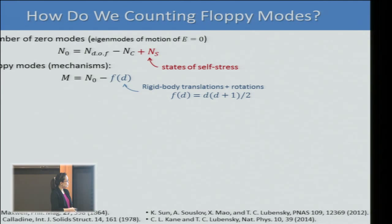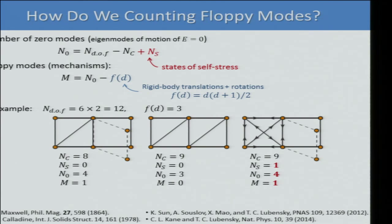Here is a simple example with six particles in two dimensions. The system has 12 degrees of freedom and three rigid body degrees of freedom. In the first example with eight constraints and no states of self-stress, you get four zero modes, one of which is non-trivial — changing the shape of the plaquette. Adding one more bond eliminates the floppy mode.